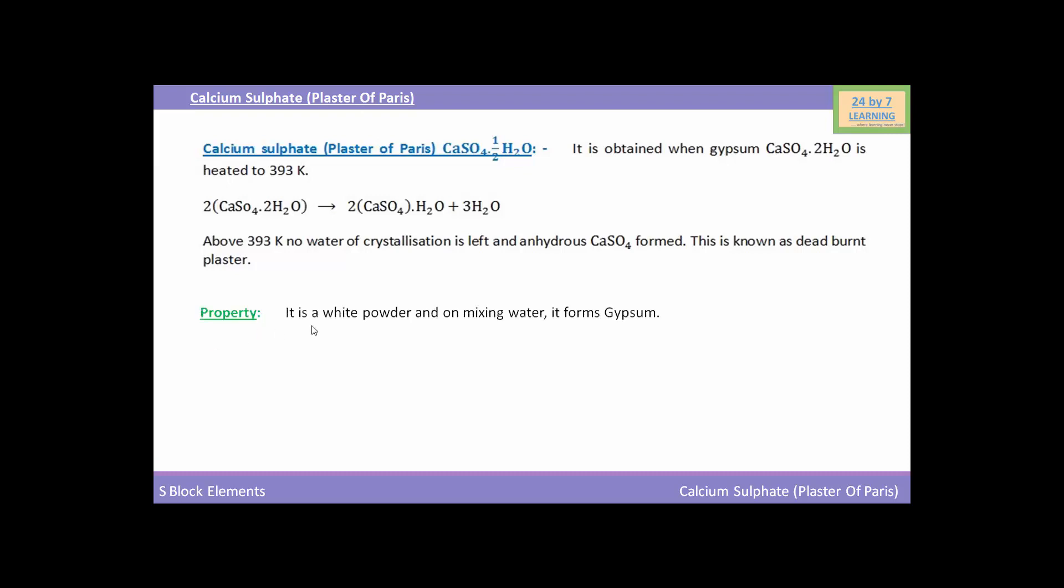Now we will see the property of calcium sulfate. It is a white powder and on mixing water it forms gypsum.